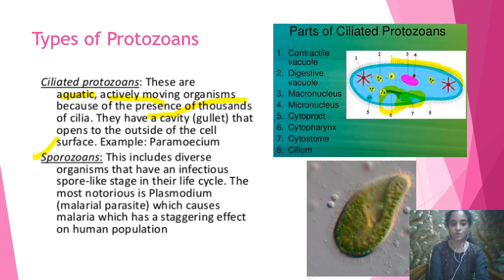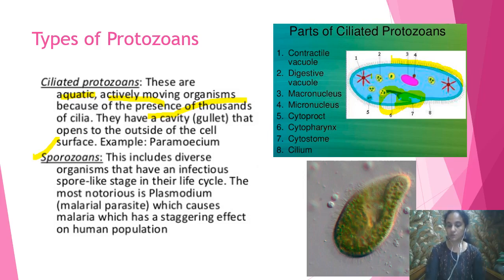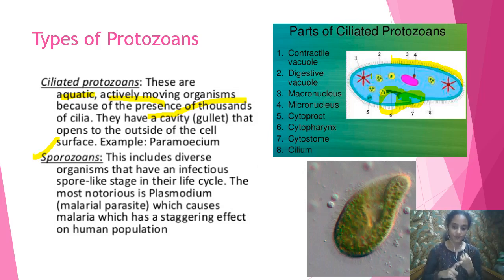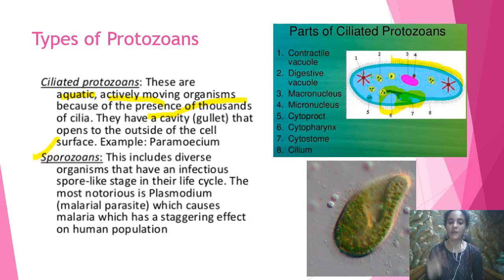To summarize, Protista is divided into five groups: chrysophytes, dinoflagellates, euglenoids, slime molds, and protozoans. Protozoans are further divided into four categories: amoeboid, flagellated, ciliated, and sporozoans. These are new terms, so repeat them, practice spelling, and write notes with key identifying characters.